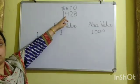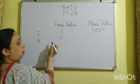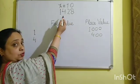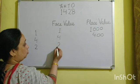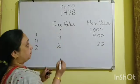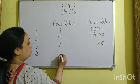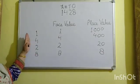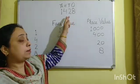The next digit is 4. The face value of 4 is 4, but the place value of 4 is 400 as it is in the hundreds position. The next digit is 2. The face value of 2 is 2, and the place value of 2 is 20, or 2 tens. The last digit is 8. The face value of 8 is 8, and the place value of 8 is also 8. So the face value is the number itself, but the place value is according to the position it is placed in the number.